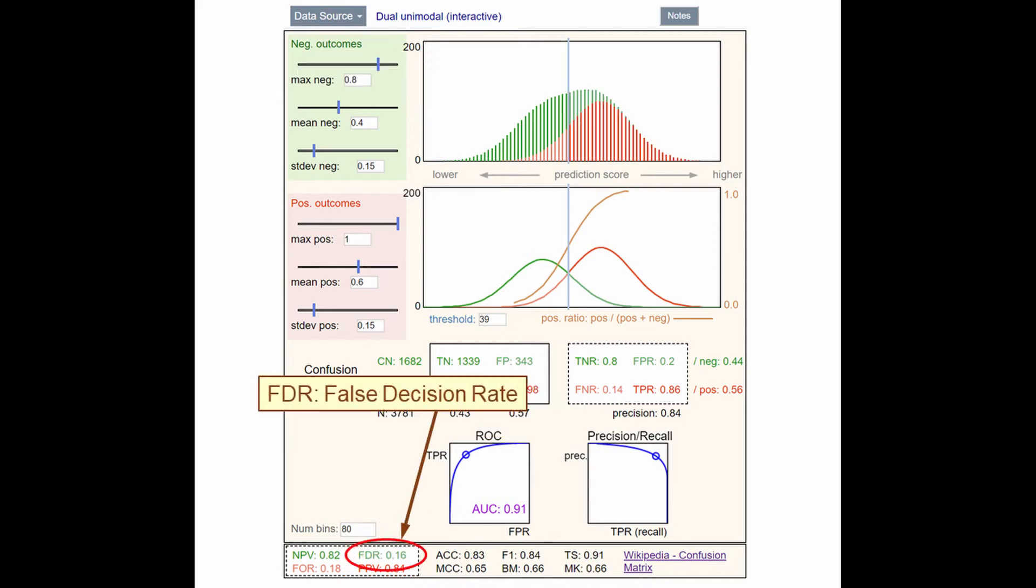The complement of precision is false discovery rate. That's the amount of green area to the right of the threshold compared to red plus green falling on the right of the threshold.